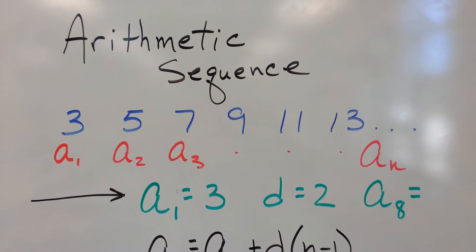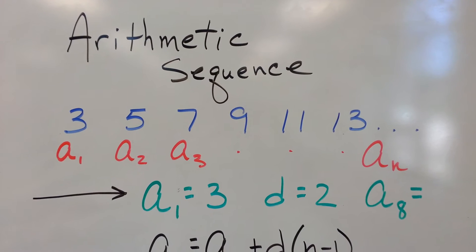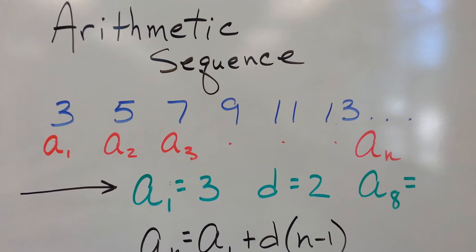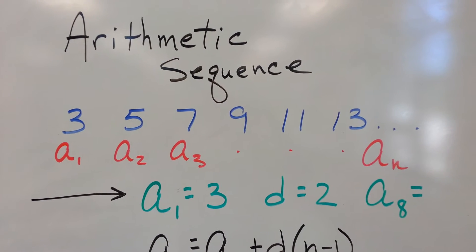We're counting by twos. So it's like linear, right? We're going 2, 2, 2, 2. Kind of like slope - we're going up 2, up 2, up 2. It's called an arithmetic sequence.